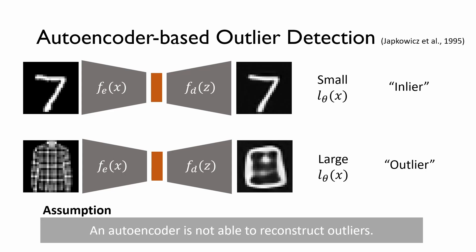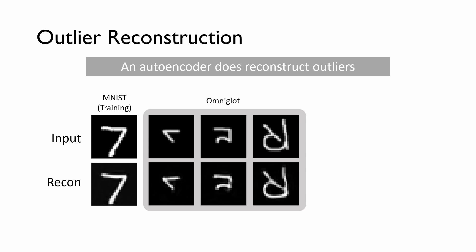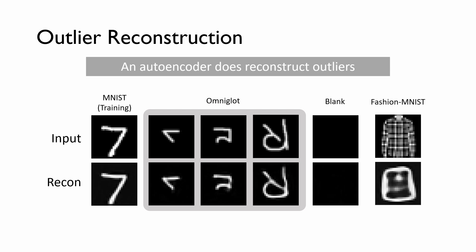The critical assumption here is that an autoencoder is not able to reconstruct outliers. In fact, however, an autoencoder does reconstruct some outliers. For example, we find that an autoencoder trained on MNIST can reconstruct characters from Omniglot, and also images with low intensities. Note that this autoencoder is not the identity mapping. We named this phenomenon the outlier reconstruction. Our goal is to suppress this phenomenon to build a better outlier detector.